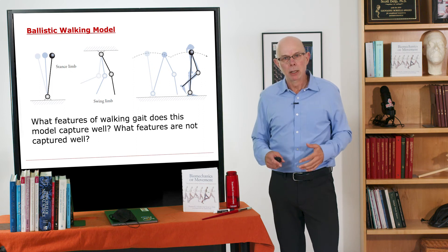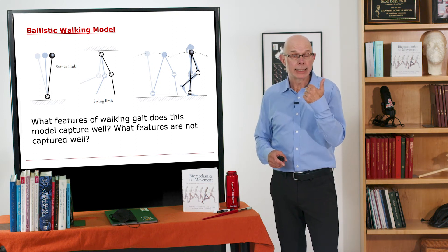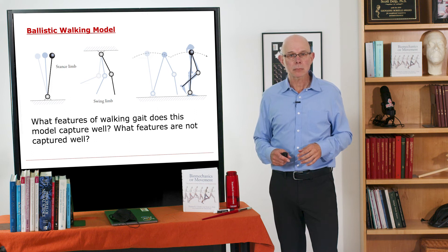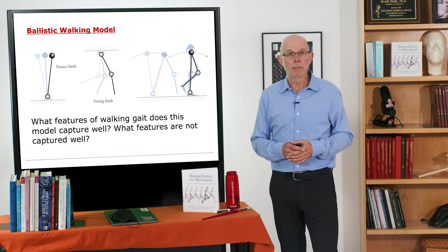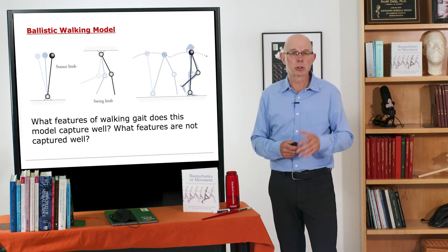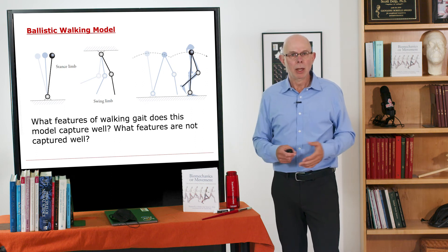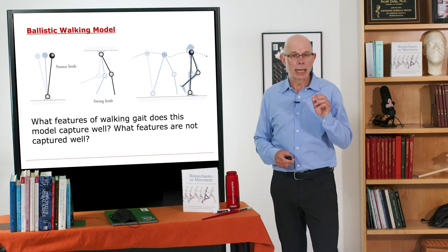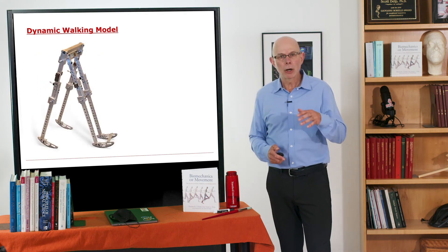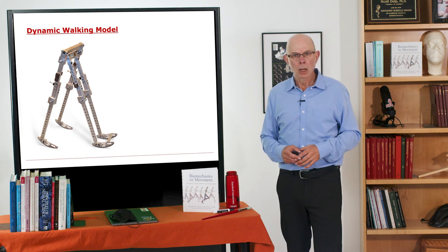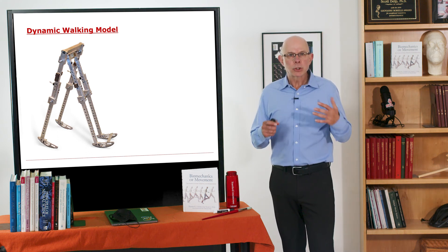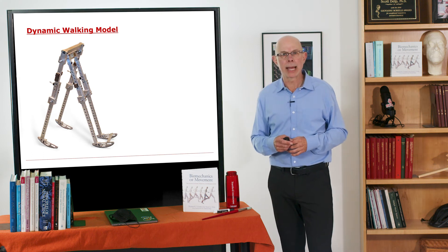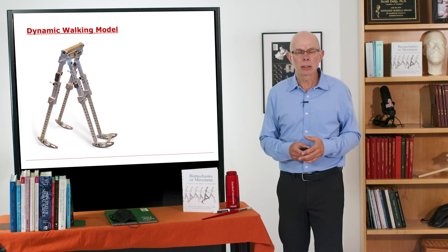The ballistic walking model captures the fluctuation of kinetic and potential energy during the gait cycle well, and also captures swing phase dynamics at slow walking speeds. However, the model can't take steps and the ground reaction forces it produces are not realistic. Nonetheless, it was quite inspirational and inspired the dynamic walking model introduced by Art Kuo and Max Donelan in 2010 as a positive next step.